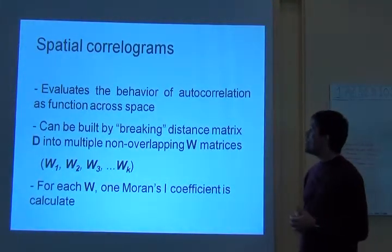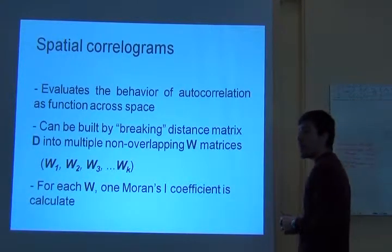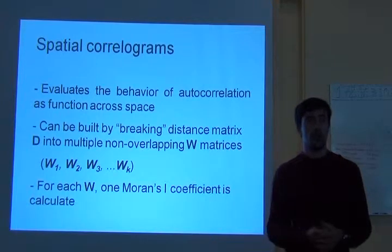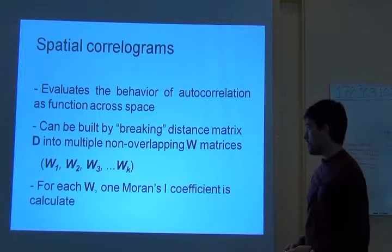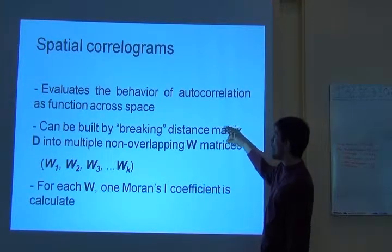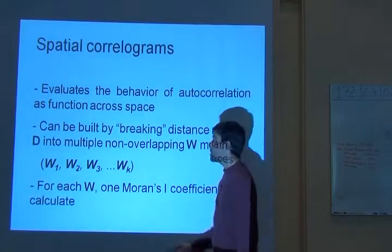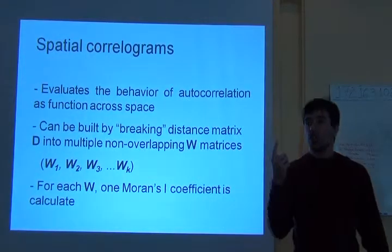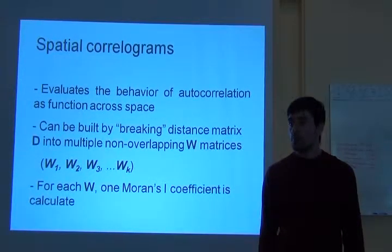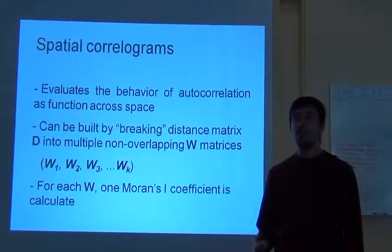Spatial correlograms evaluate the behavior of spatial autocorrelation across space — it's like calculating a spectrum of spatial autocorrelation, showing how spatial autocorrelation varies as you become more and more distant. We can build a spatial correlogram by calculating multiple Moran's I using non-overlapping W matrices. The first W matrix has ones for sites within a short distance and zeros for all other sites. The second W matrix has zeros for short-distance sites, ones for intermediate-distance sites, and zeros for everything else.